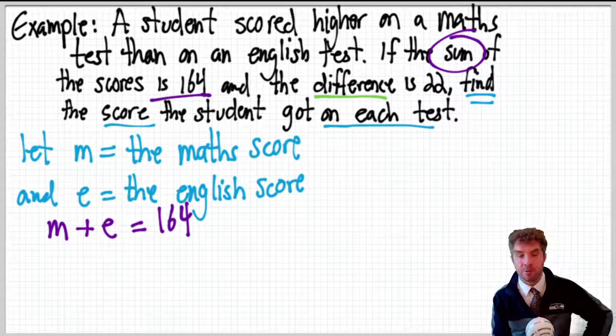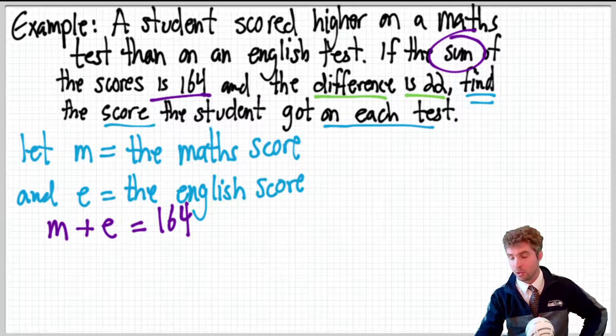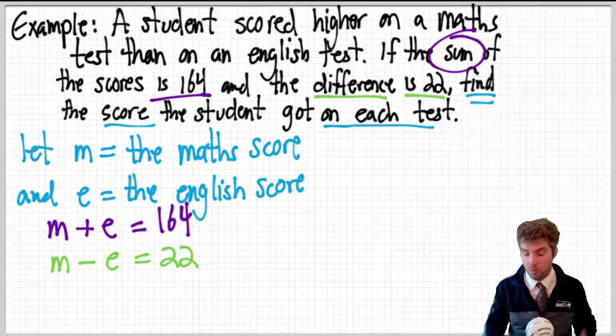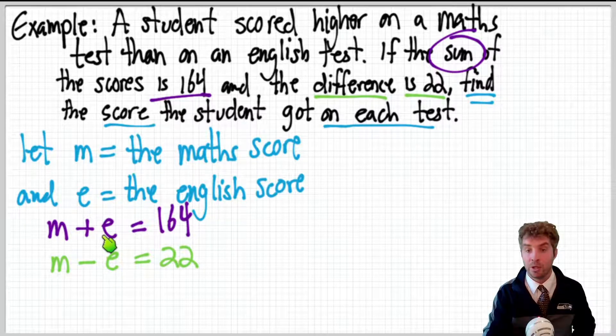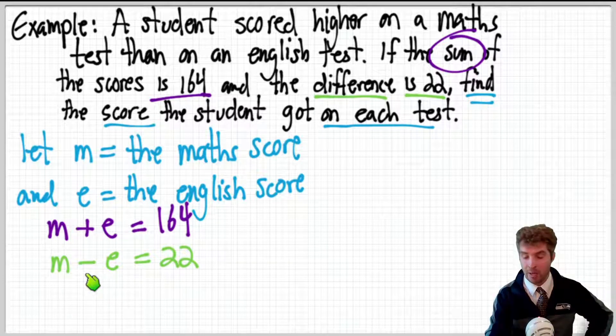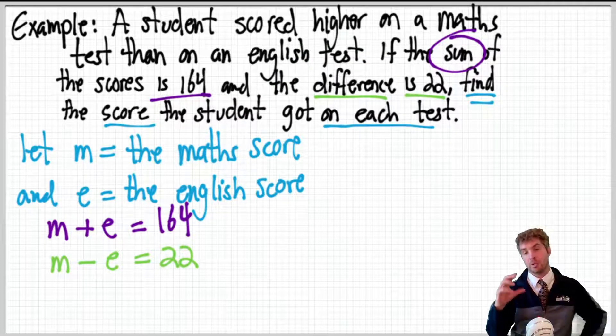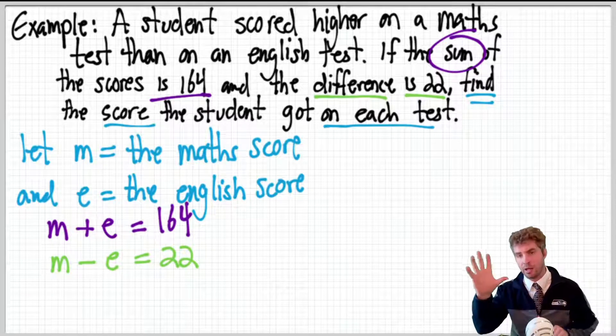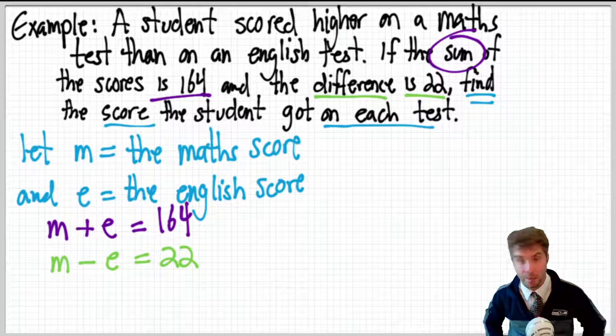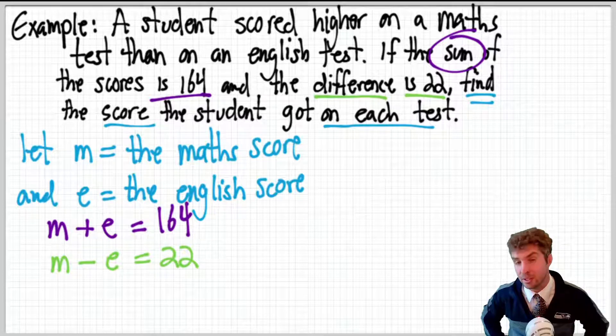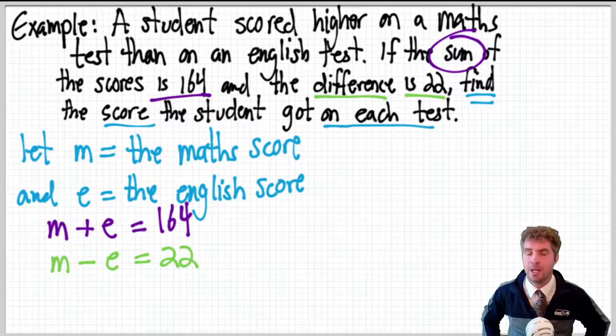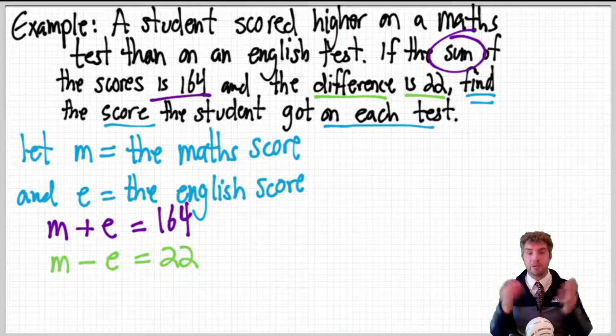Then it says the difference is 22. Difference always means subtraction. So, the difference is 22. So, M take away E is 22. Now, could we have done E plus M here? We could have written those the other way around because adding two numbers together doesn't matter which order, but subtraction, the order matters. And we know that they scored higher on the maths. So, we're going to take the higher one and subtract the lower one. The higher one, subtract the lower one. So, that's why it's M take away E. And that's very important. Otherwise, you'll get the answer wrong. Probably just a negative. Something will be negative when it should be positive. You're not going to score a negative score on a test or whatever, hopefully. Anyway, we have our two equations.